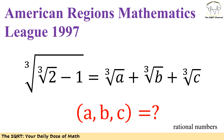Hello everyone, welcome to the SQRT channel. In this video I'm going to take a problem from the American Regions Mathematics League from 1997. In this problem we have a simple equation: on the left hand side we have the cubic root of the cubic root of 2 minus 1, and on the right hand side we have the sum of three terms — the third root of a, the third root of b, and the third root of c. We know that a, b, and c are rational numbers and we are going to find their values. This problem is a tricky one.